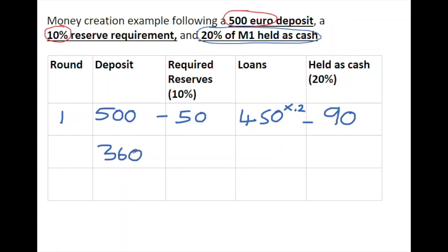€360 — the difference between them — comes back into the banking system in round two as a new initial deposit. 10% of that new deposit must be kept in cash as reserve, so that's €36. The difference between these two figures can be loaned out again as the potential maximum loan, which is €324 — a new loan issued into the economy.